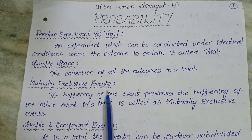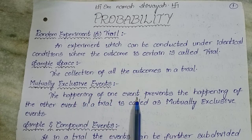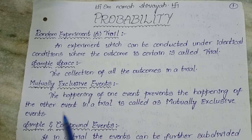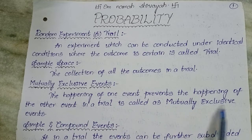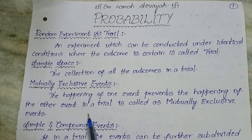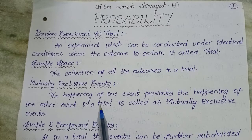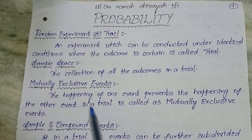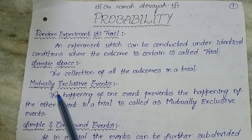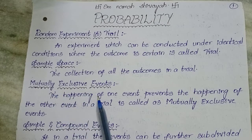Mutually exclusive events. The happening of one event prevents the happening of the other event in a trial is called as a mutually exclusive event. If you have written an exam, you will either pass or you will fail. You can't pass and fail at the same time. So if you pass, you will not fail. If you fail, you will not pass. Those type of events are known as mutually exclusive events.